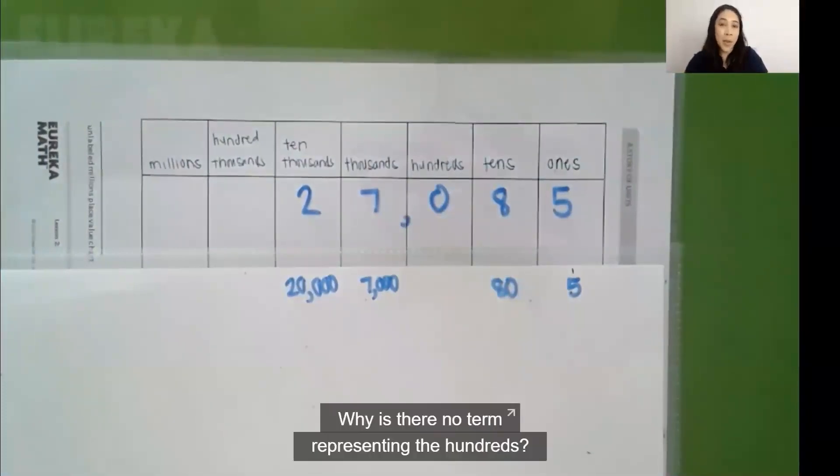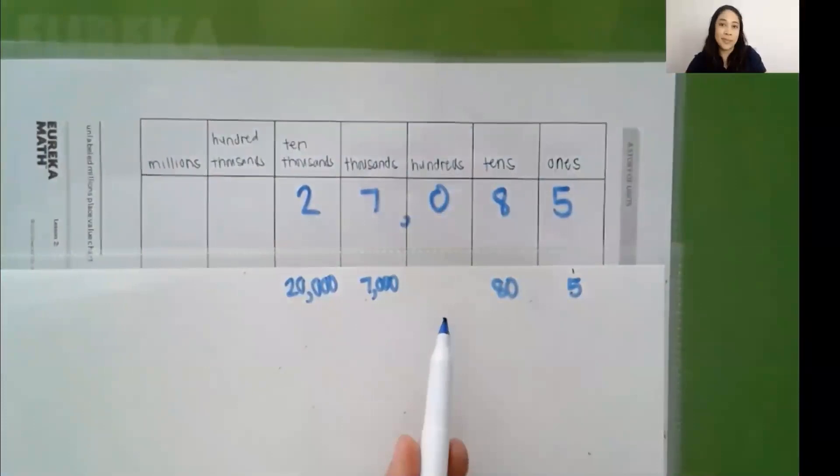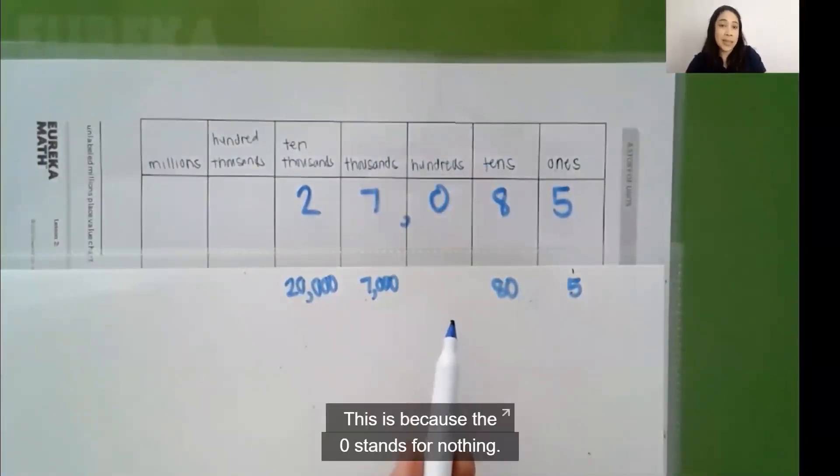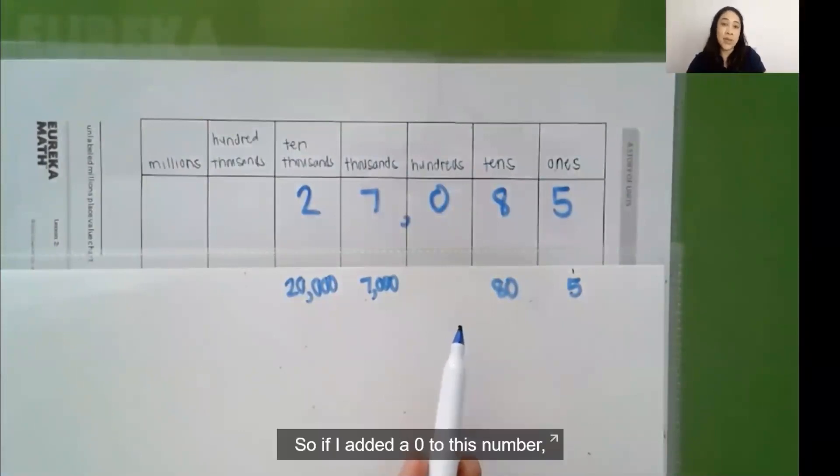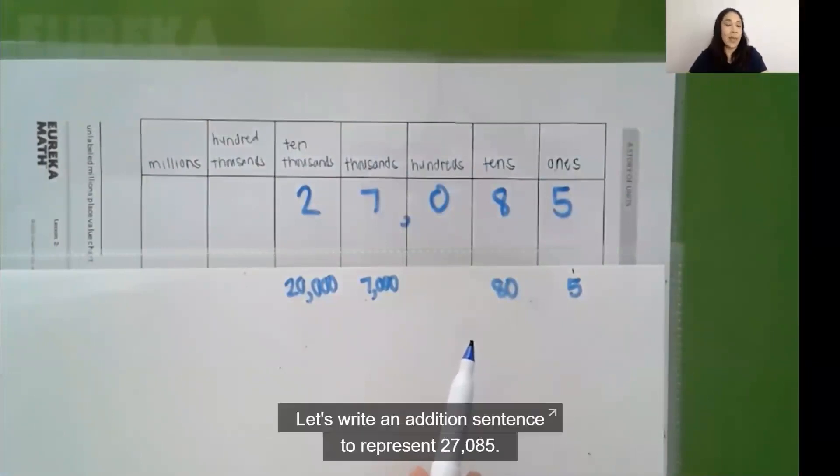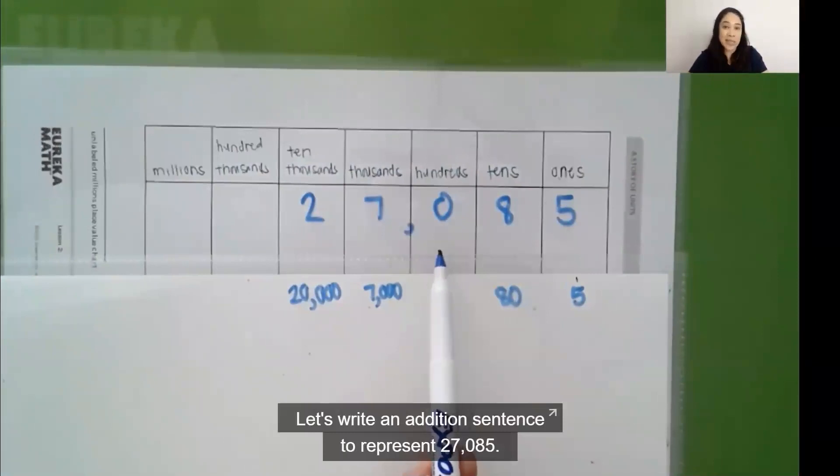Why is there no term representing the hundreds? 1,708. This is because the zero stands for nothing. So if I added a zero to this number, it wouldn't change the value. Let's write an addition sentence to represent 27,085.